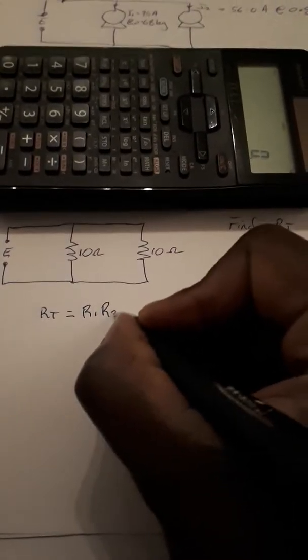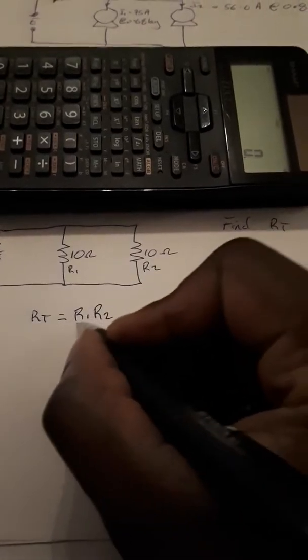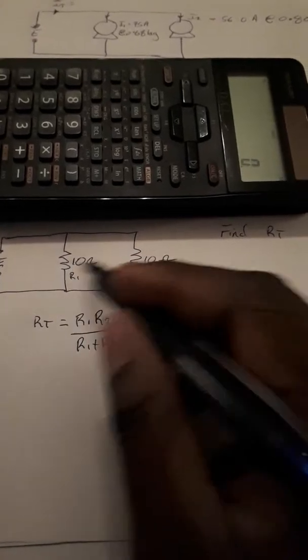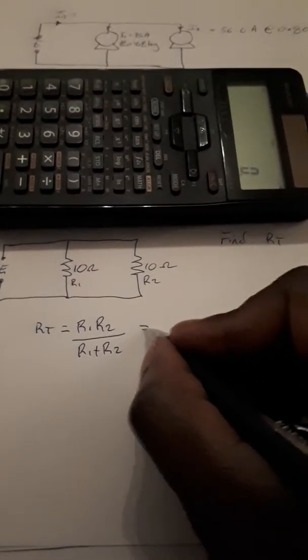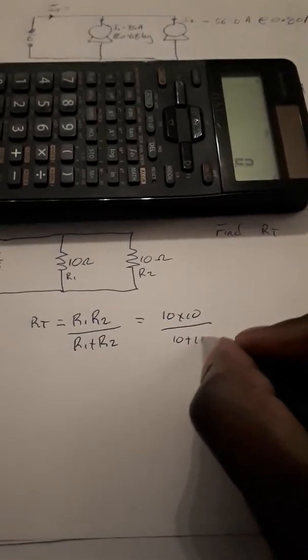So that's R1, that's R2, over R1 plus R2. So the product of the two over the sum of the two. It's going to be 10 times 10 over 10 plus 10, which is 100 over 20, 5 ohms.